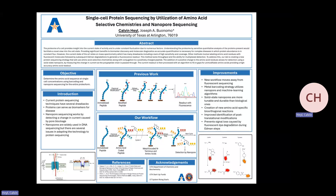We'll also be creating new amino acid-specific bioorthogonal reactions, shown here in the bottom right. Lysine, cysteine, and tyrosine are shown as examples of what these reactions might look like. You can use a fluorophore to confirm binding, or replace that with a metal peptide that reacts with your side chain. These are just three of the residues we're currently working on; others are also being developed. This will allow improvement in the identification of post-translational modifications compared to previous methods, and also prevents signal loss caused by fluorescent dye degradation during Edman steps — which previously limited the length of the peptide that could be sequenced.